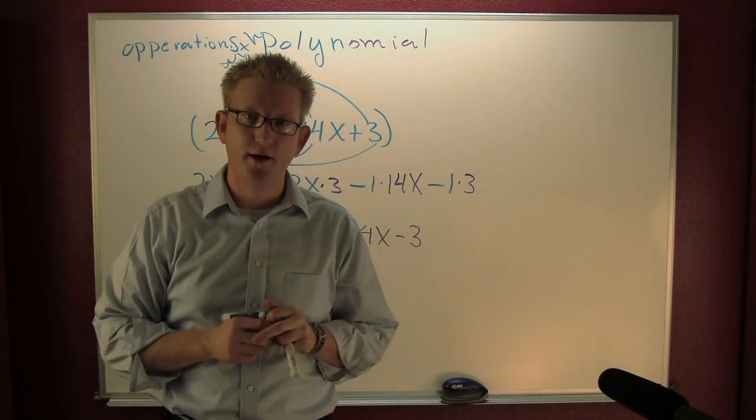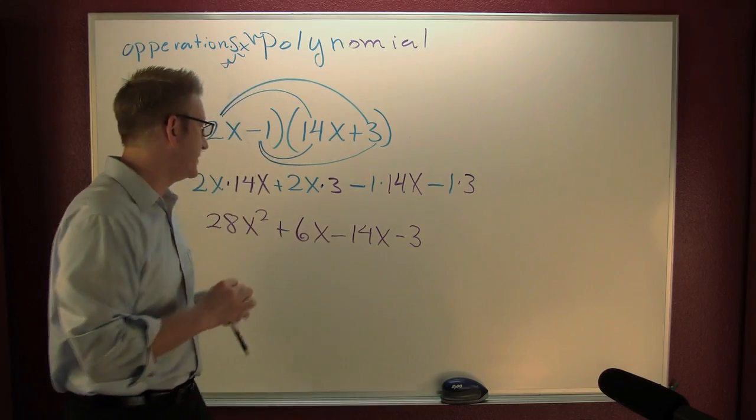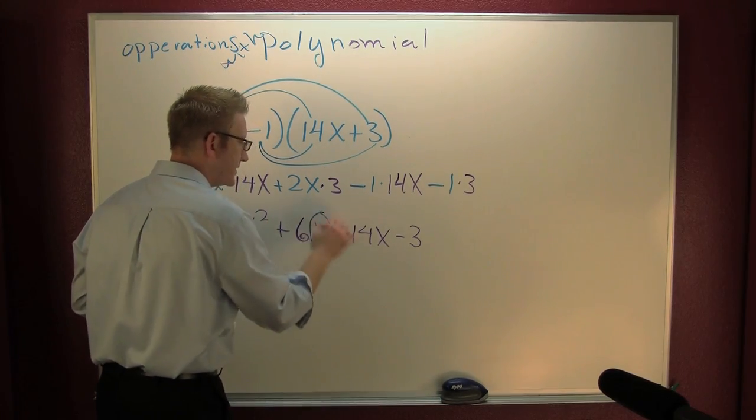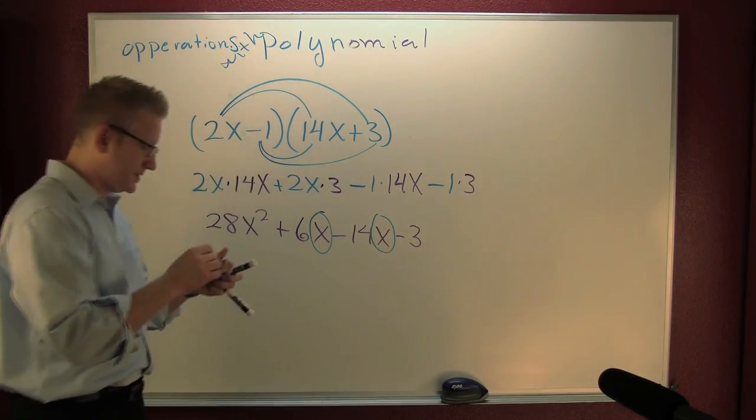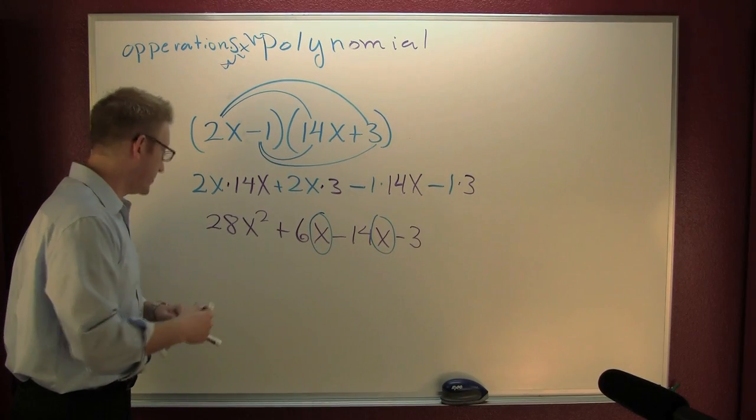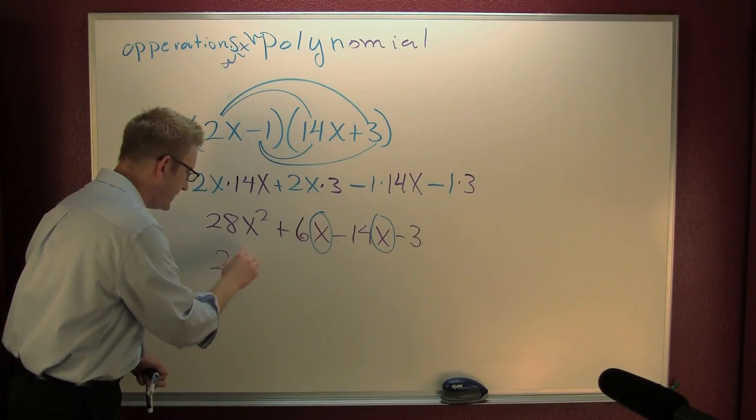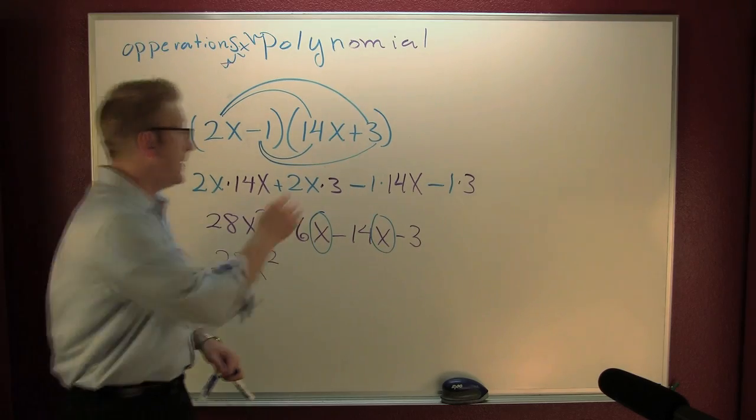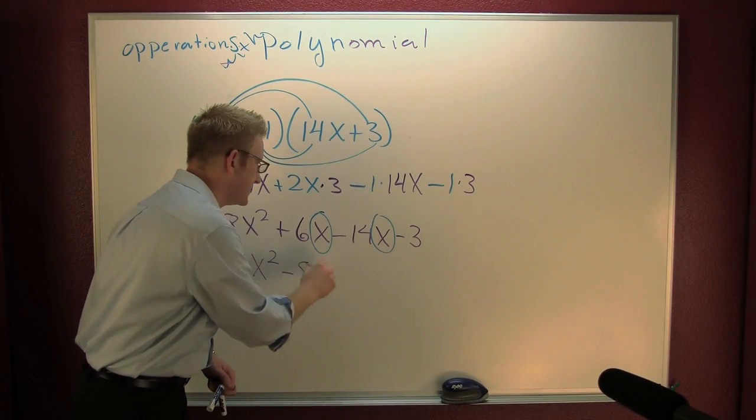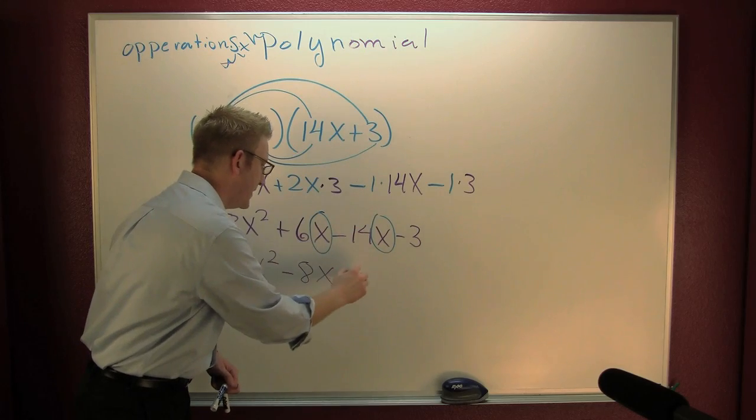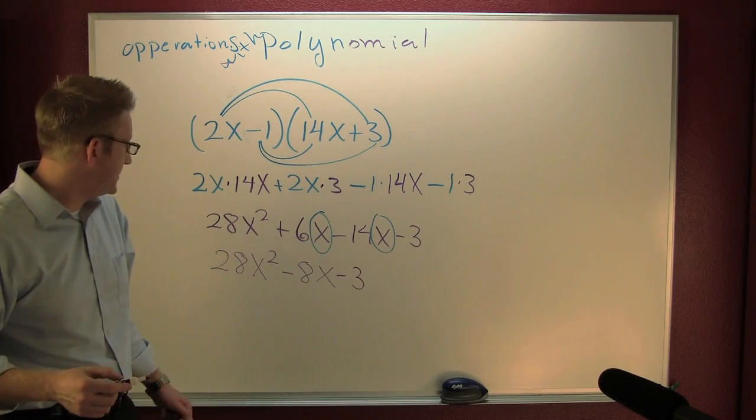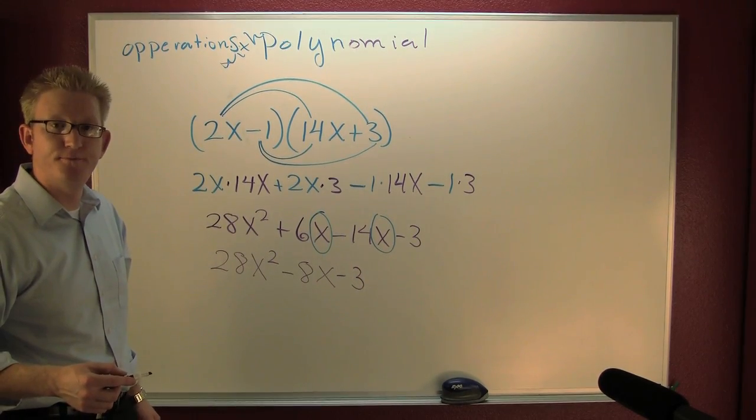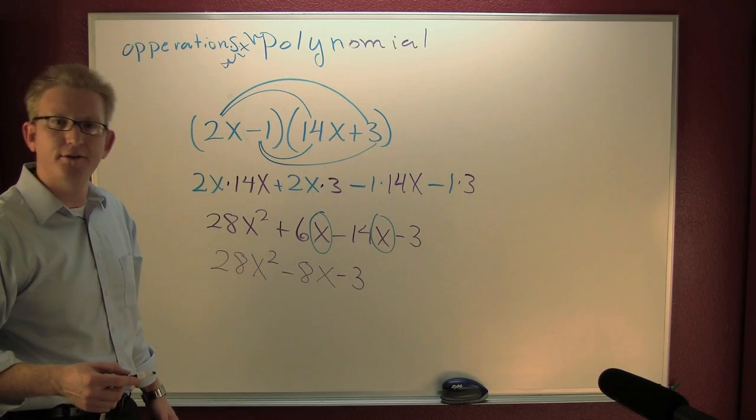Gather, collect, and combine. Do I have any like terms? I believe I do. It looks like there's some x's and there's some x's. I'm gonna write it in descending order: 28x² minus 8x minus 3.